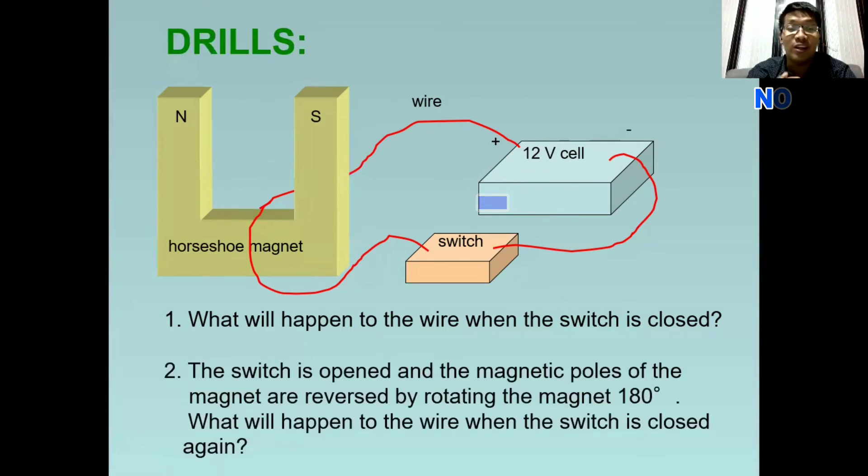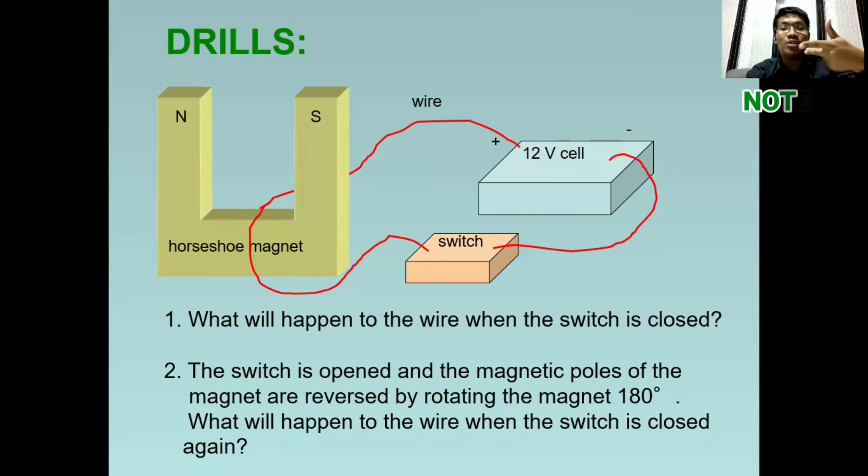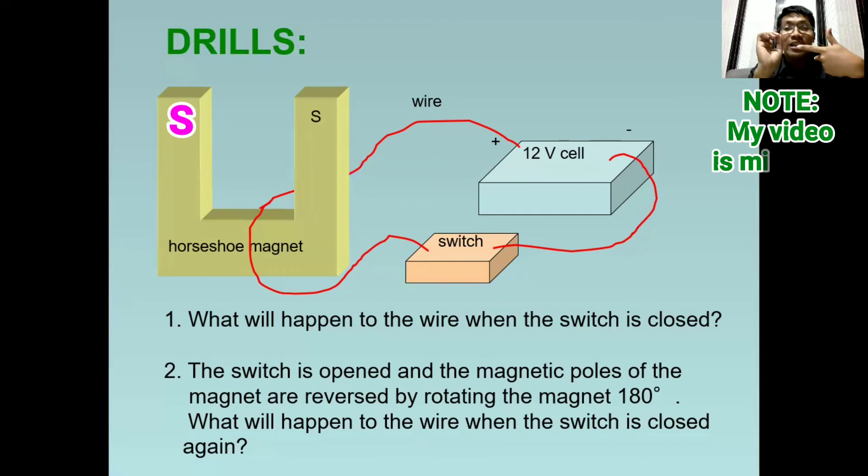So let's have the second question. The switch is opened and the magnetic poles of the magnet are reversed. Again, the magnetic poles of the magnet are reversed by rotating the magnet 180 degrees. What will happen to the wire when the switch is closed again? So originally, this is the position of our hand, left hand. So this time, sabi ay, tinearn natin or ni-reverse natin ang direction ng magnetic poles. So si south ay napunta sa kaliwa at si north ay napunta sa kanan.